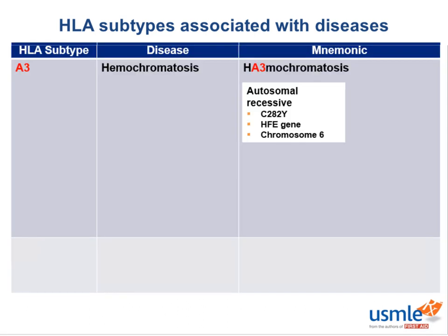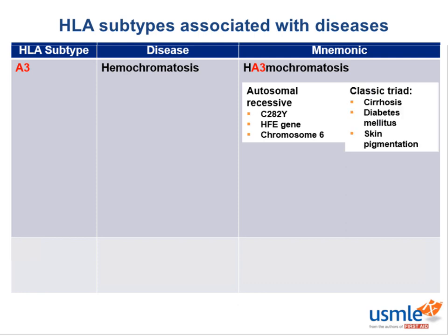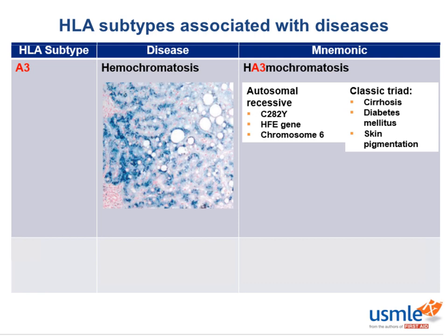The classic triad of hemochromatosis is cirrhosis, diabetes, and skin pigmentation — commonly referred to as bronze diabetes. Here in this image, we can see hemocytorin or iron on a liver biopsy stained with Prussian blue.